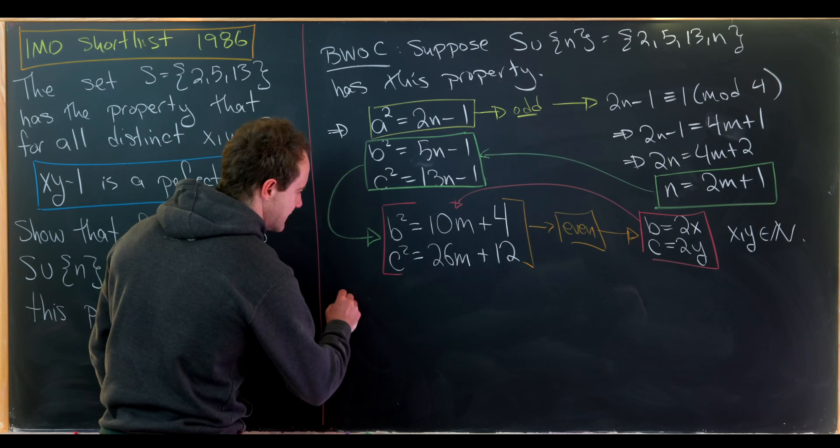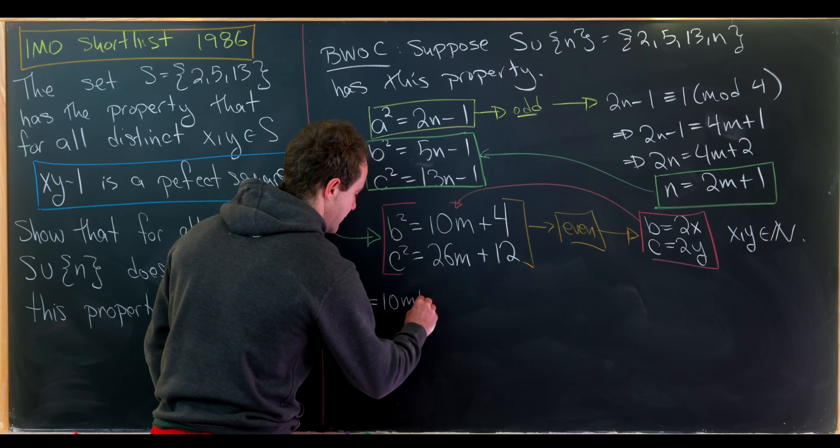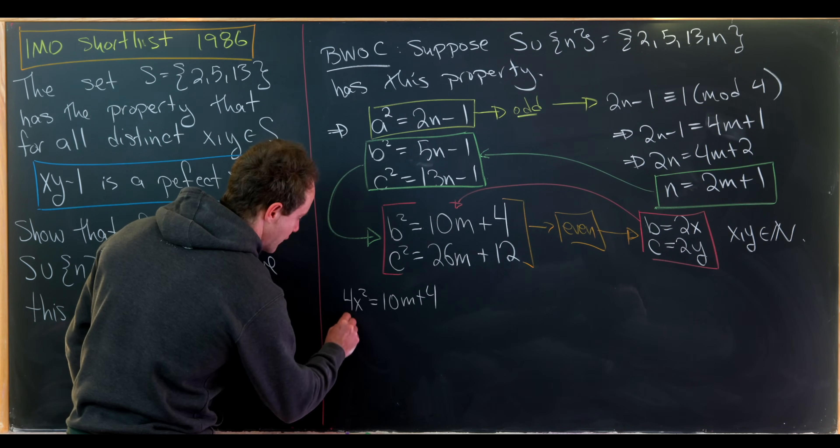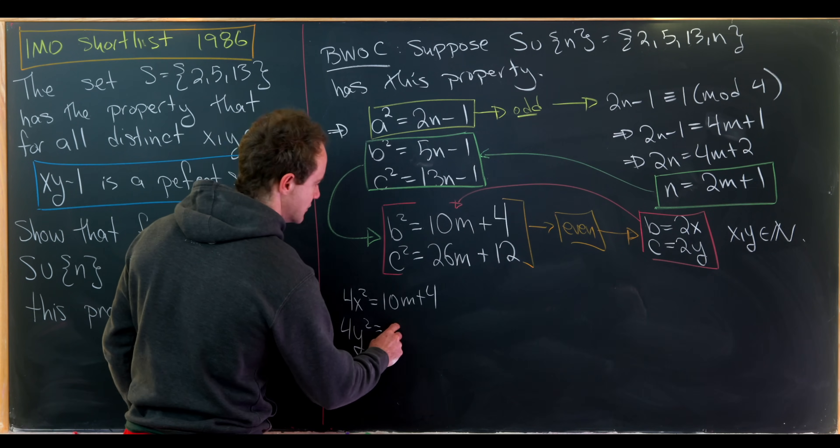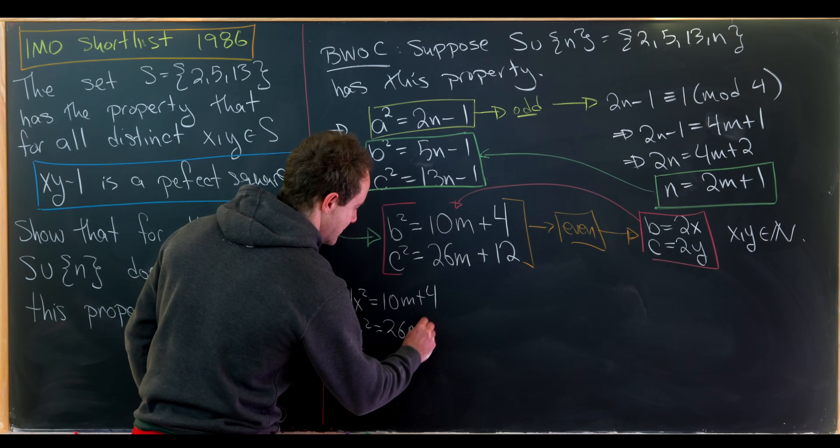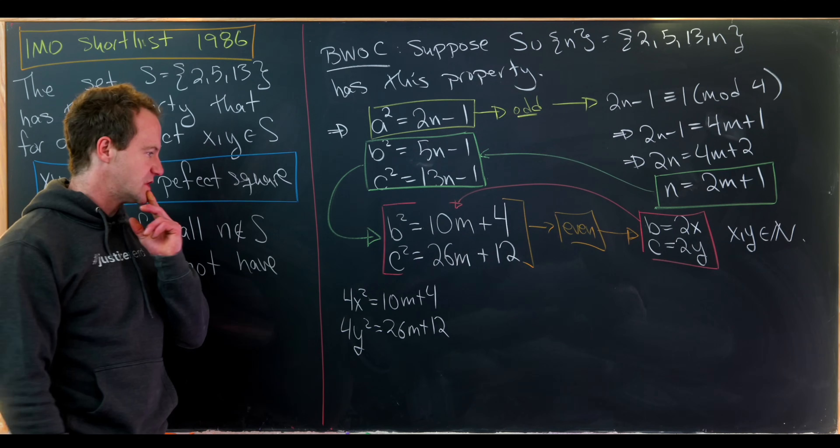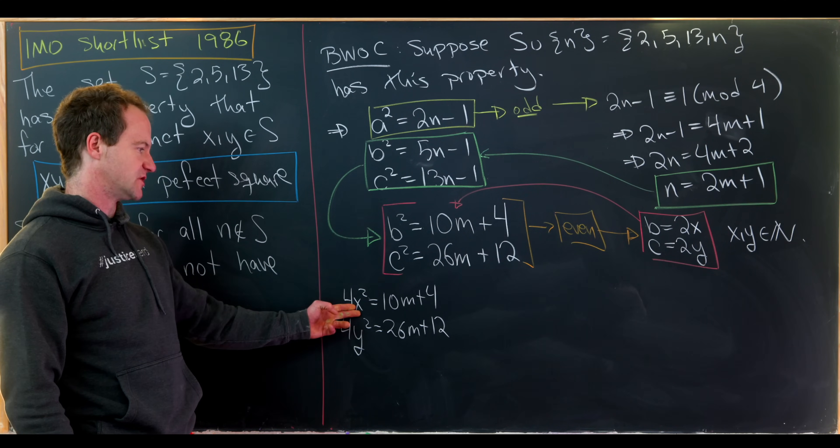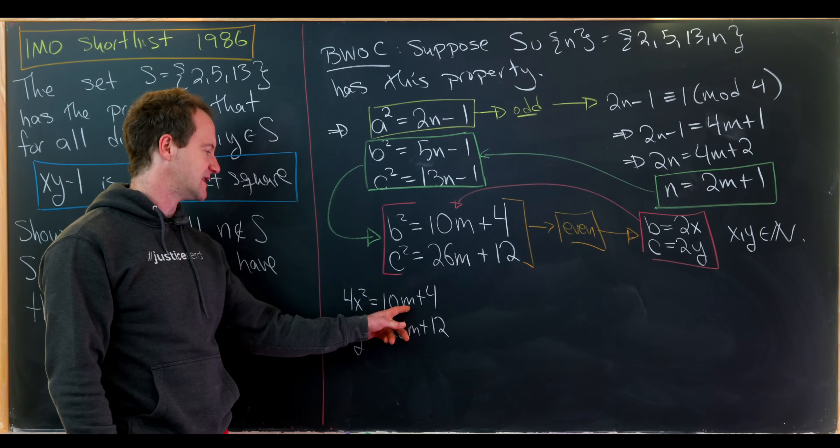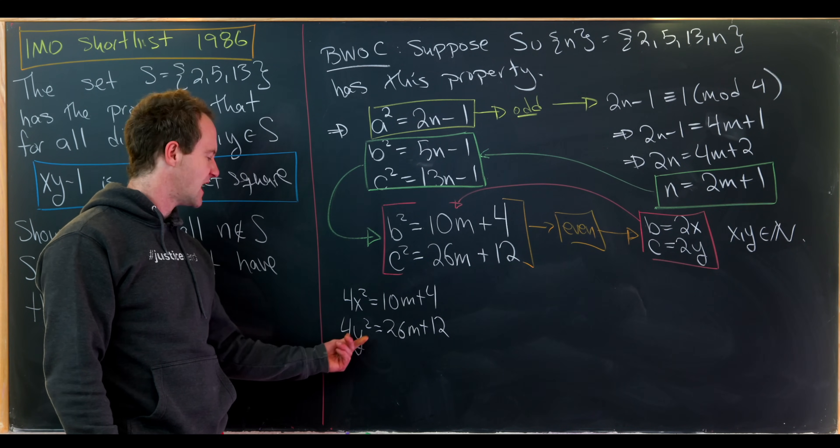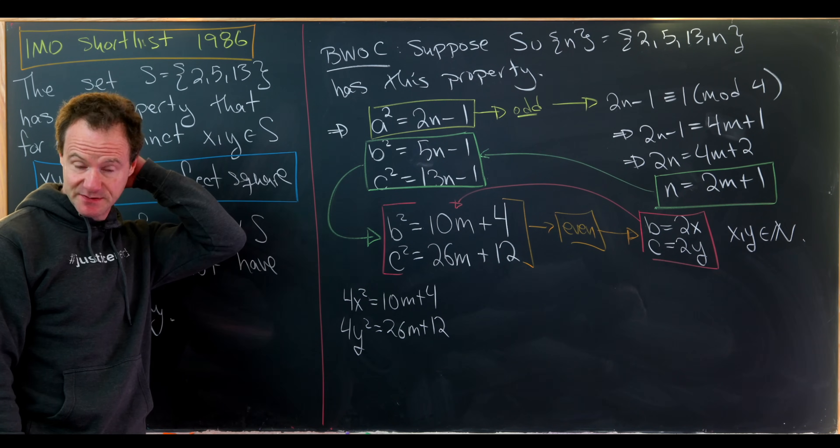So that'll leave us with 4x squared equals 10m plus 4, and then we'll have 4y squared is equal to 26m plus 12. And then if we look at this for a little bit, we'll notice that 4x squared is a multiple of 4, 4 is a multiple of 4, 10 is not a multiple of 4. That means that m must be even. And then similarly, this equation down here also tells us that m has to be even.